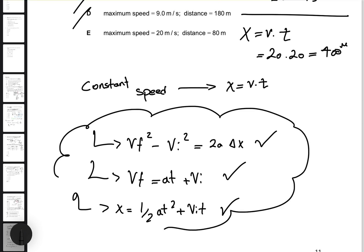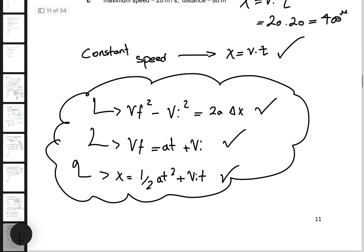For constant speed, use X equals VT. For constant accelerative motion, use VF squared minus VI squared equals 2A·ΔX, or VF equals AT plus VI, or X equals one half AT squared plus VI·T. Make sure to practice past A-level multiple choice questions, specifically the foundation questions — that'll help you a lot. Thank you for watching, see you soon and take care.